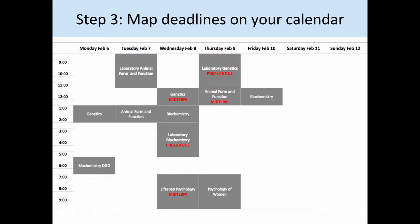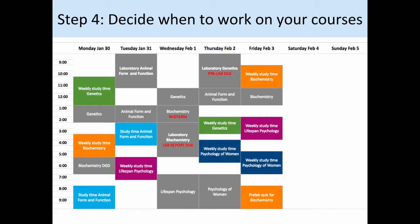Decide what time during the week is best for you to work on each of your courses. Block it off in your calendar now for the entire semester, then do this for the rest of your classes. In this example, I have put four hours of study time aside per class per week. Decide how much time you will need to work on all of the assignments you will have due throughout the year. Fit in the amount of time needed for each assignment and midterm in the slots left.